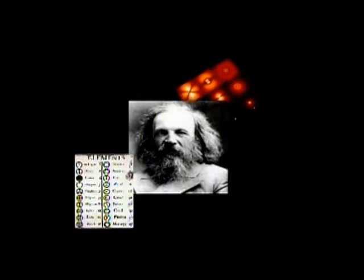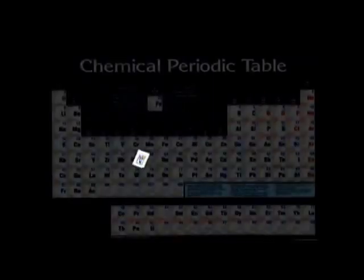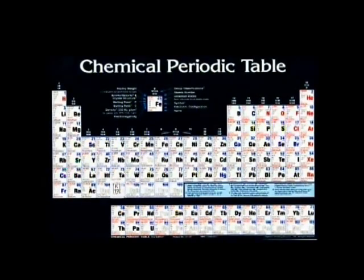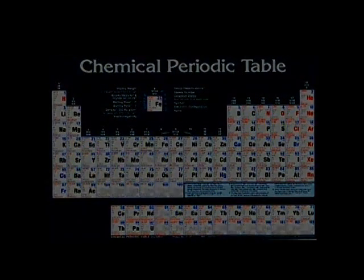I saw in a dream a table where all the elements fell into place as required, he reported. Awakening, I immediately wrote it down on a piece of paper, and only in one place did a correction later seem necessary. As a result of this dream, the periodic table of elements was created.